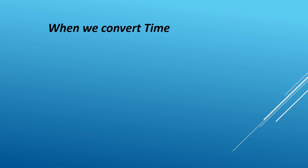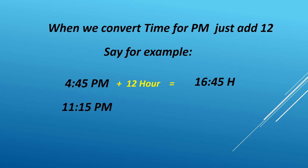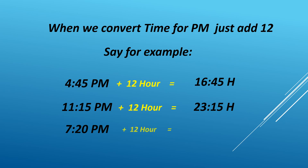When we convert time for PM, just add 12. For example, 4:45 PM plus 12 hours equals 16:45H — we read it as 1645 hours. Similarly, 11:15 PM plus 12 hours equals 23:15H — we read it as 2315 hours. And 7:20 PM plus 12 hours equals 19:20H — we read it as 1940 hours. For converting PM, remember to add 12 hours to it.